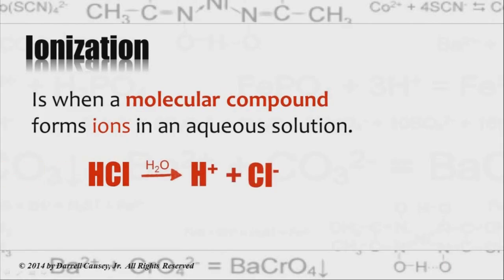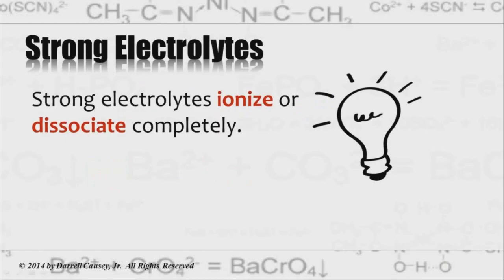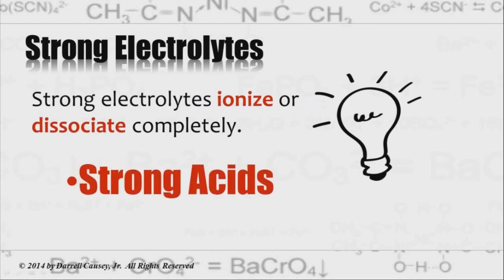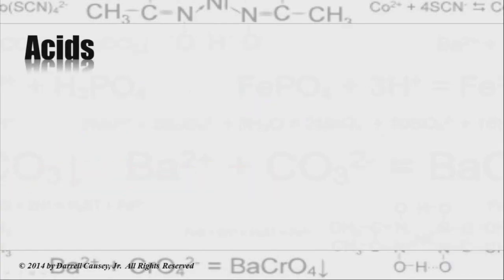We have strong electrolytes which ionize or dissociate completely, like sodium chloride. Usually, strong acids and strong bases and soluble salts are all strong electrolytes.